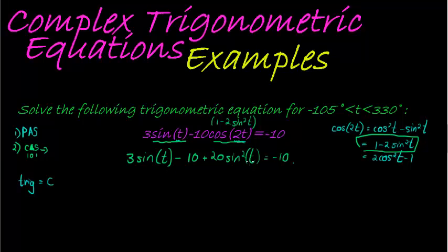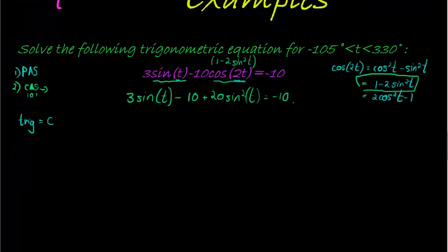And I see once again I'm working in a quadratic equation, which means I want the format ax squared plus bx plus c. So in other words, get all of the terms to one side. So on both sides, I'm going to add a 10 and write this term first. So I have 20 sin squared t, then plus 3 sin t.